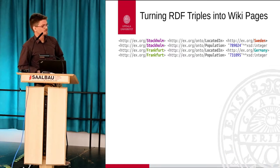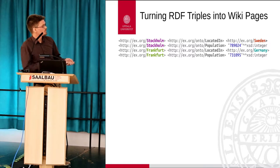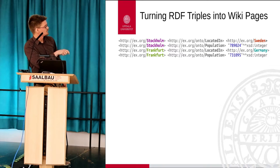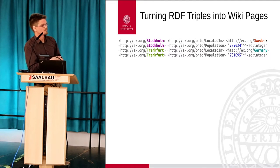Let's look quickly at how importing a few triples could look. We have four triples here: Stockholm is located in Sweden, Stockholm has a population number. Frankfurt is located in Germany. And you see these long URLs - I just used some fake URLs here to make it shorter, but they typically follow some kind of agreed-upon schema. So we want to keep them when we export again.